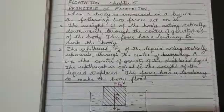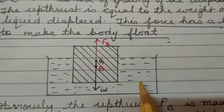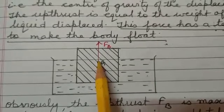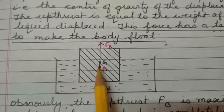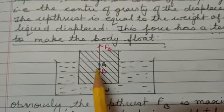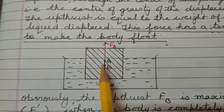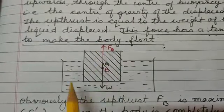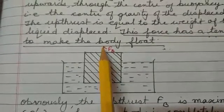This can be explained on the basis of the diagram. The weight W of the body, when immersed in a liquid, acts from the center of gravity G downward. On the other side, the up thrust or buoyant force acts from the center of buoyancy B upward, which is the center of gravity of the displaced liquid.